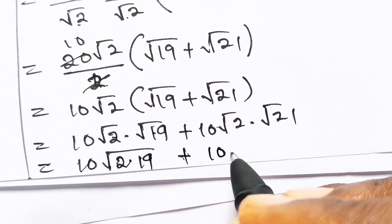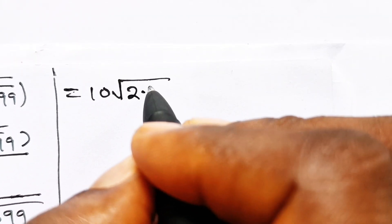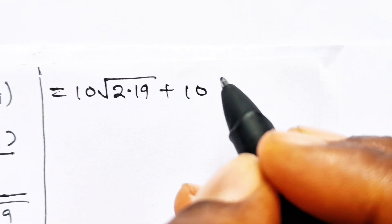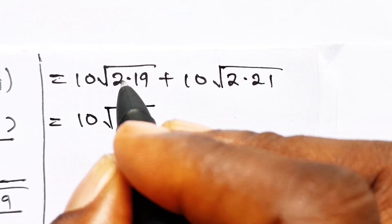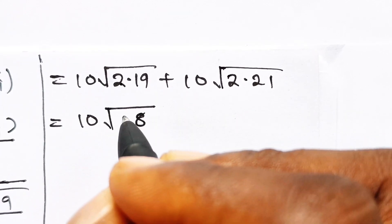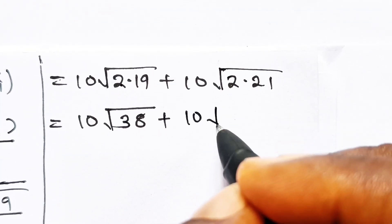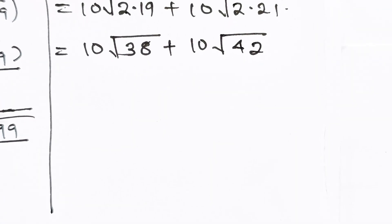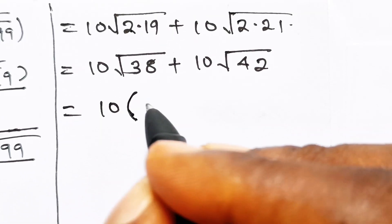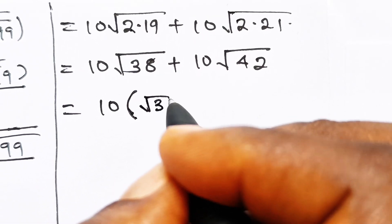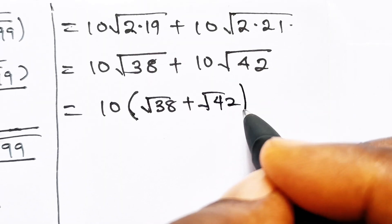We can simplify further as 10 root 2 multiplied by root 19, plus 10 root 2 multiplied by root 21. So we have 10 root 2 times 19, plus 10 root 2 times 21. We have 10 in common, so we can factorize that out and put these two in brackets: root 38 plus root 42. And that is the answer.